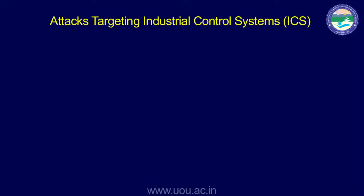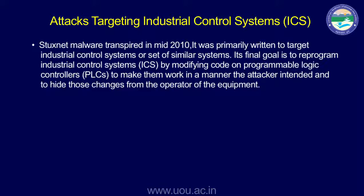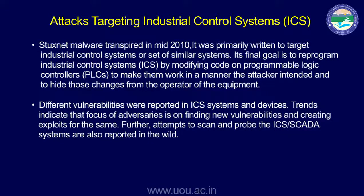There are attacks targeted on industrial control systems. One such malware is Stuxnet, which targeted nuclear power plants and other industrial control systems. These types of attacks especially target critical sectors, because critical sectors like power, oil and gas, energy, and nuclear rely on industrial control systems. Today, industrial control systems are increasingly connected to the internet, creating the possibility of attacks on those systems through the internet.